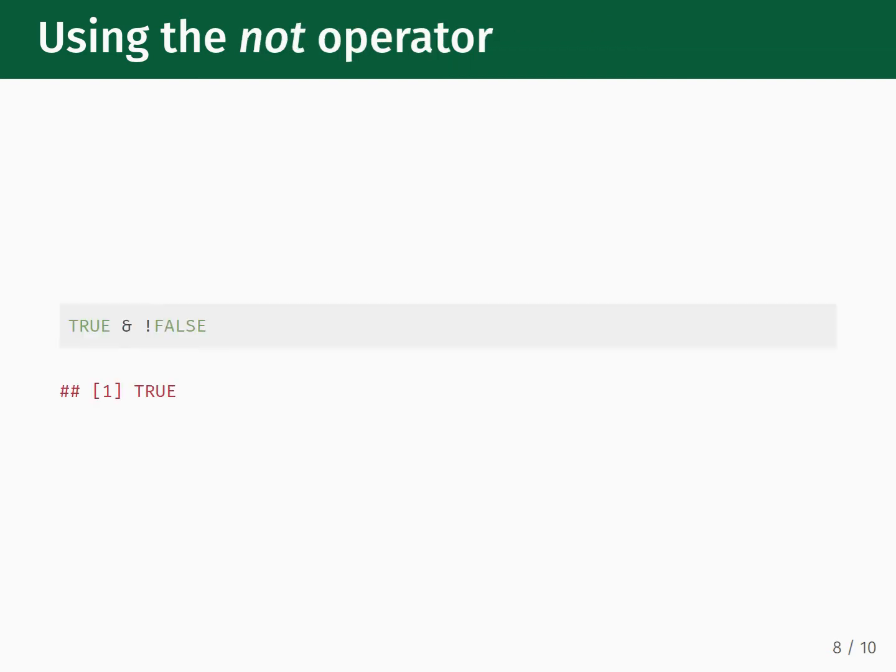The NOT operator converts TRUE to FALSE and FALSE to TRUE. This is often combined with the other operators. So if you want to write TRUE and NOT FALSE, we will get TRUE back. That is because NOT FALSE is the same as TRUE.